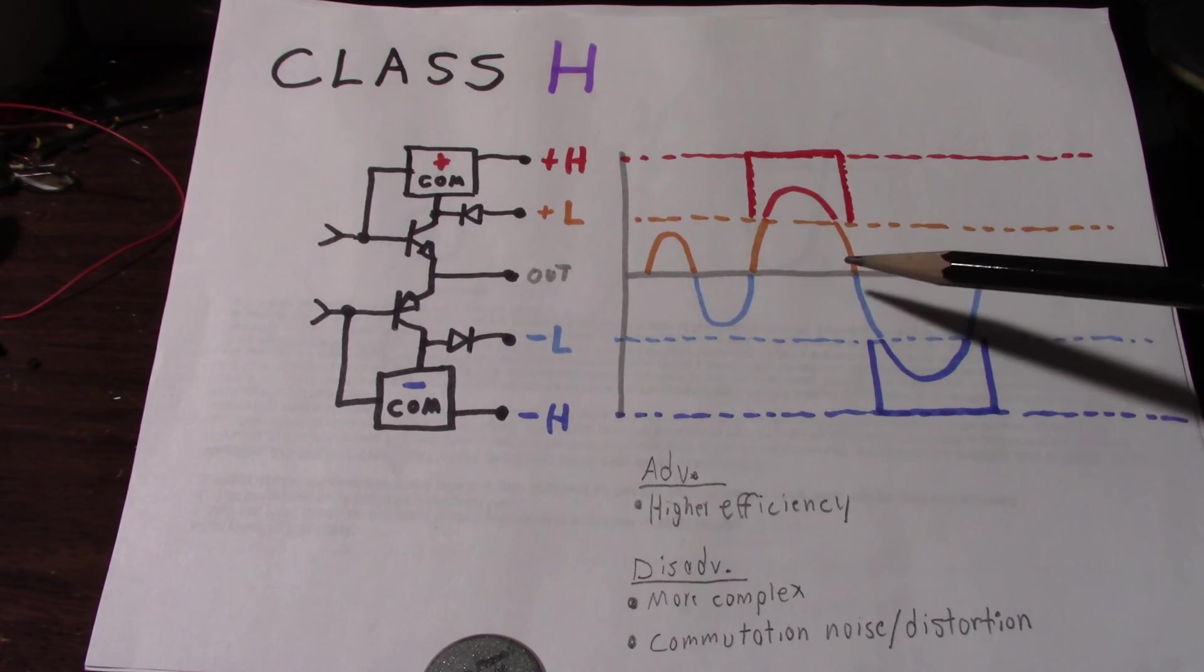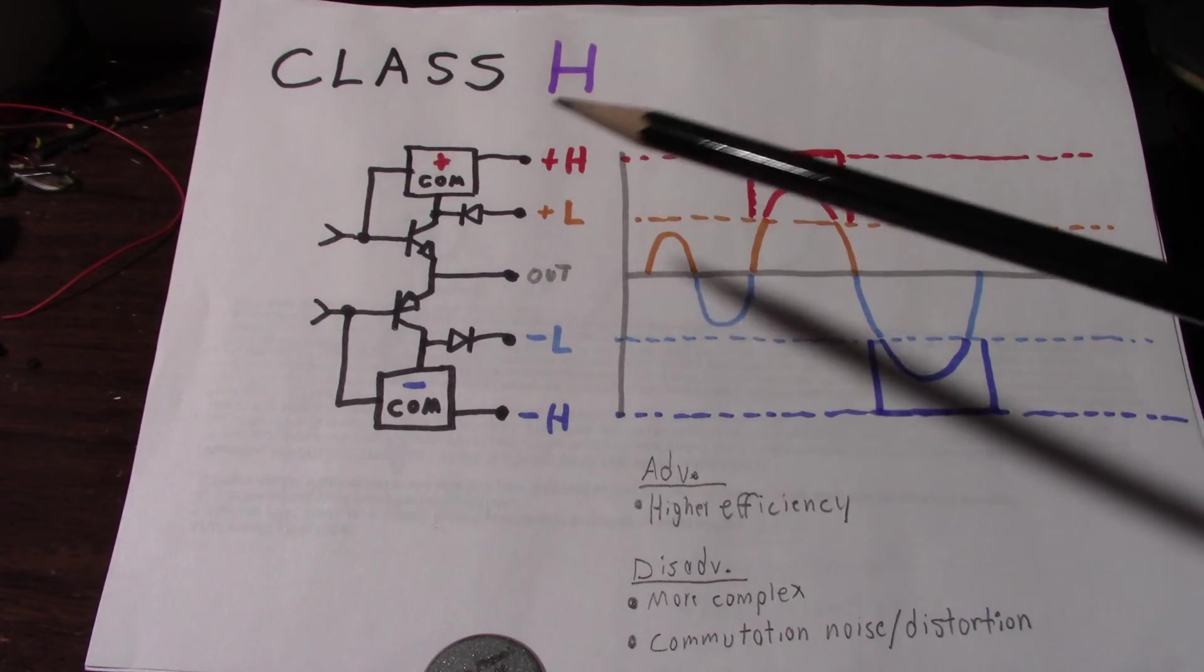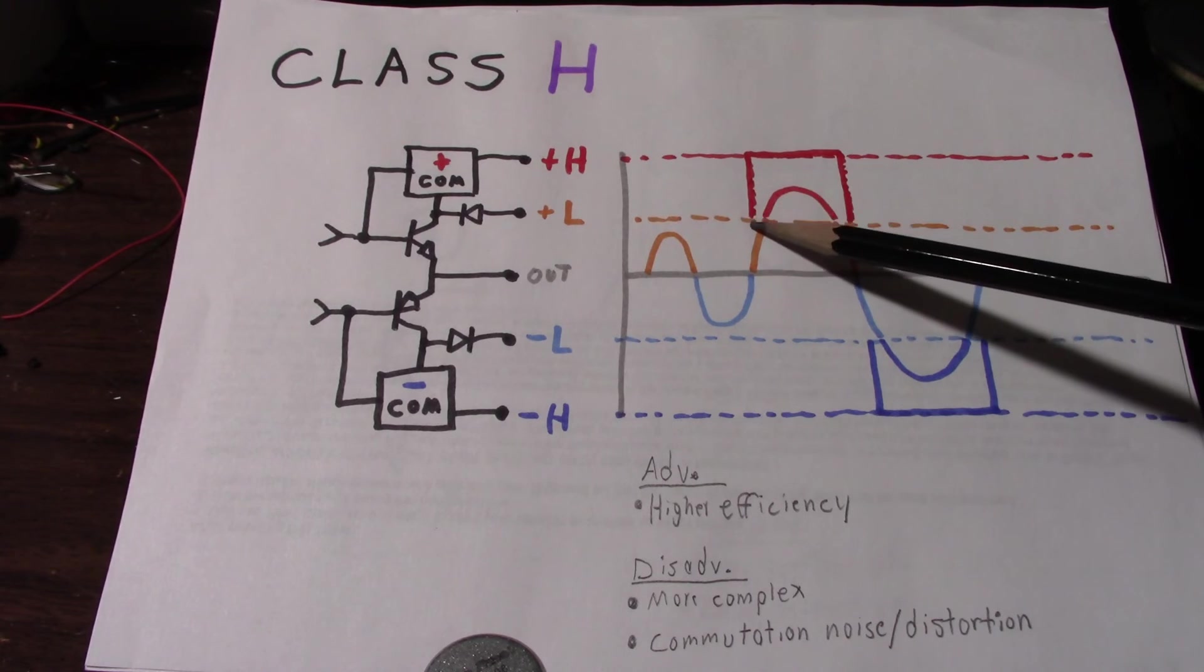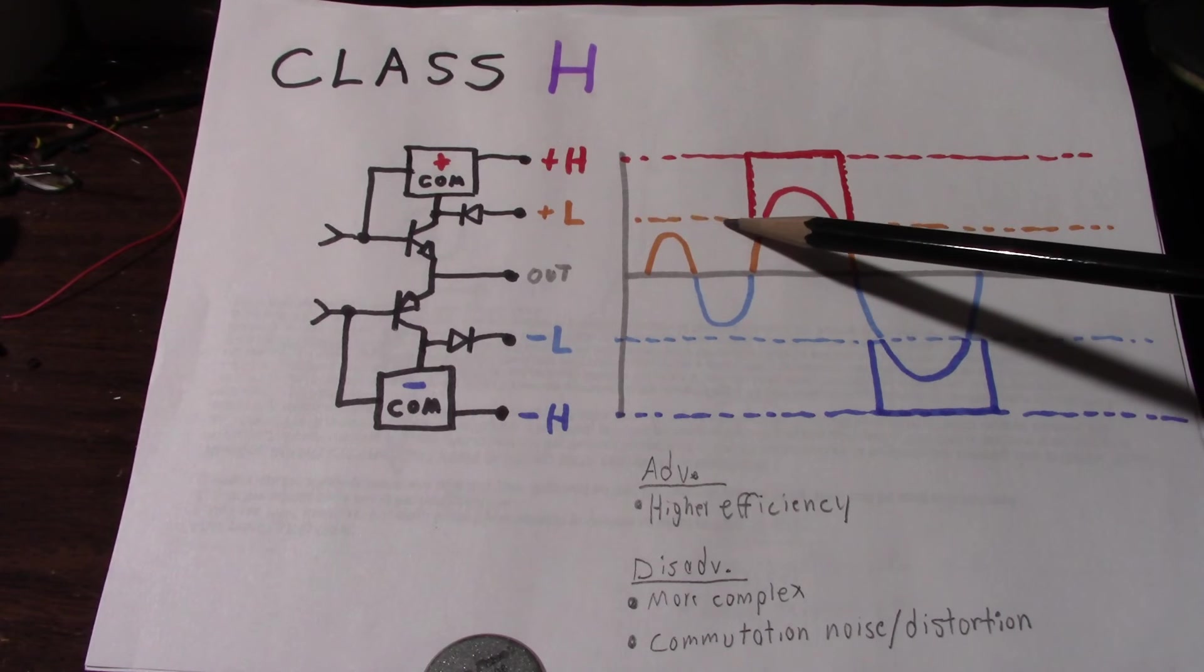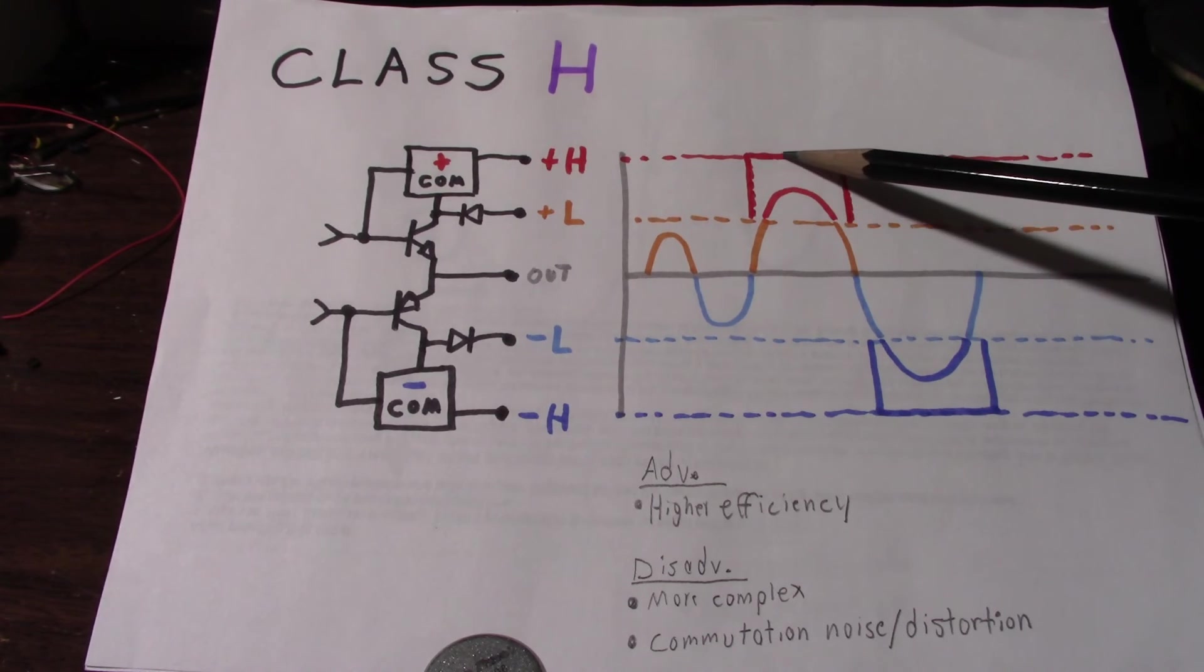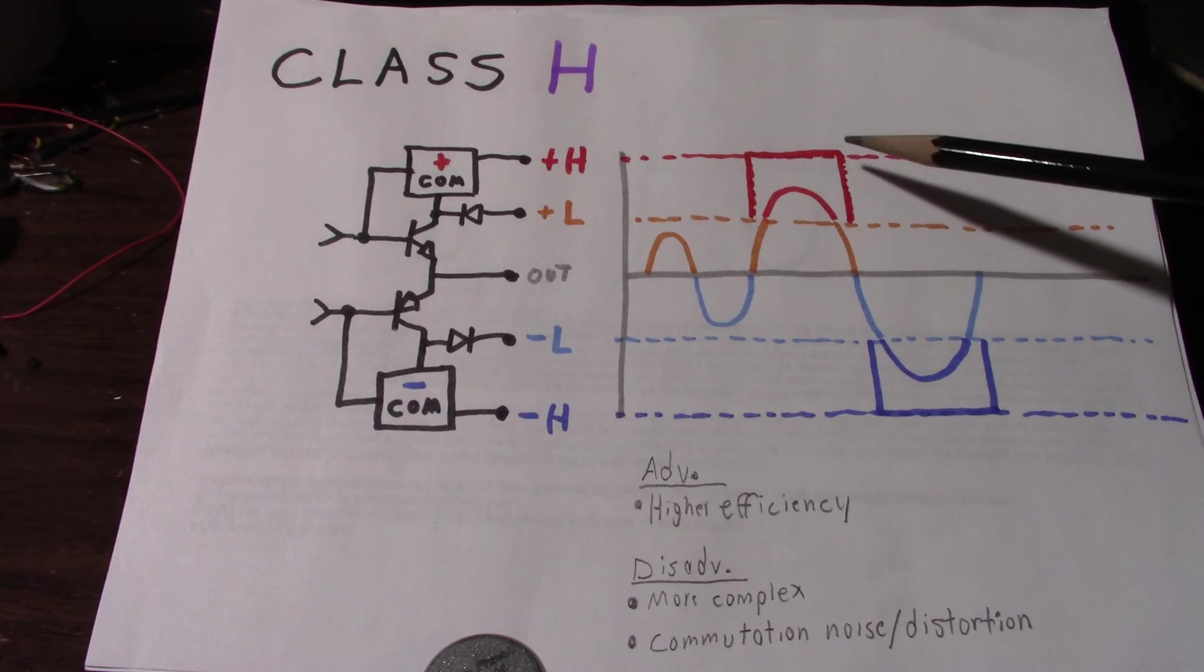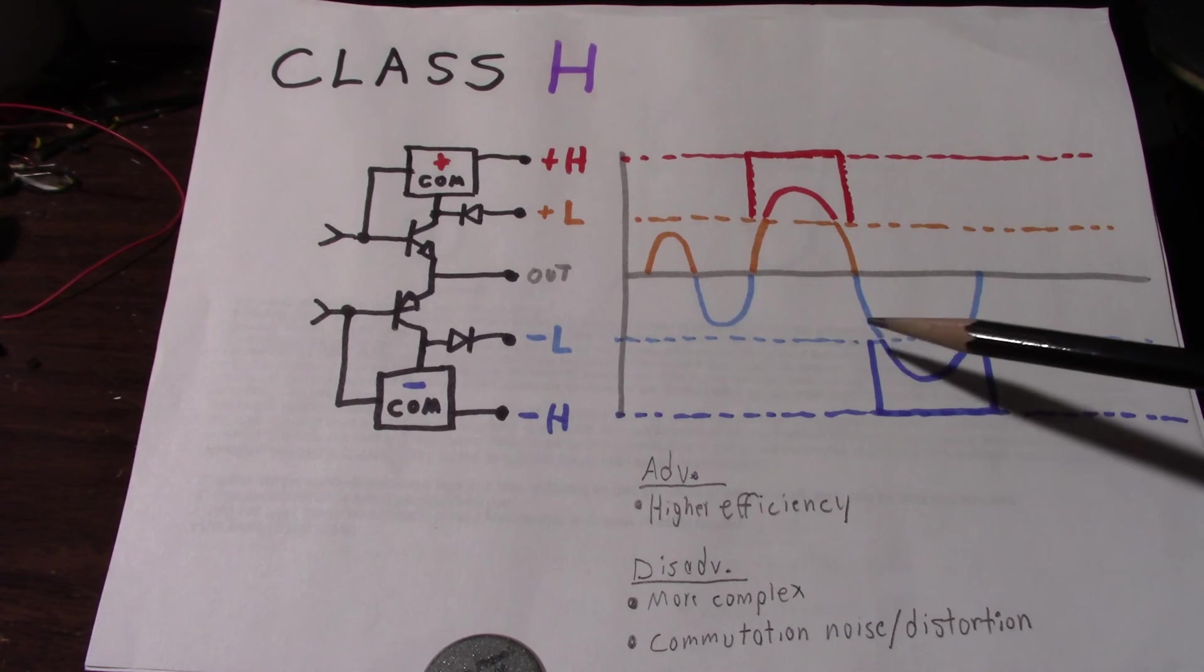And of course, the same for the negative side of the circuit as well. So the commutation circuitry detects when it's approaching the limits of the lower rail and switches the supply high. So this is actually the supply voltage. It's at a lower level, then it switches high. And when the signal's coming below the low rail, it'll switch back down to the lower rail voltage. Again, same on the negative side.